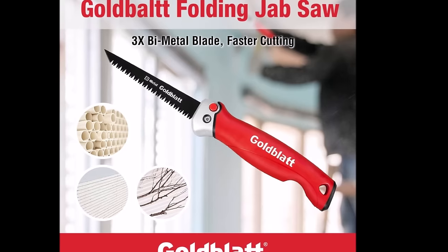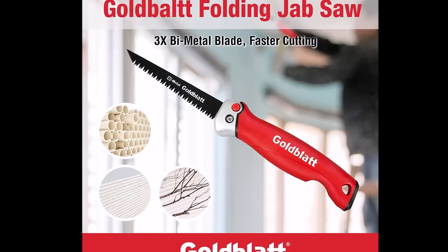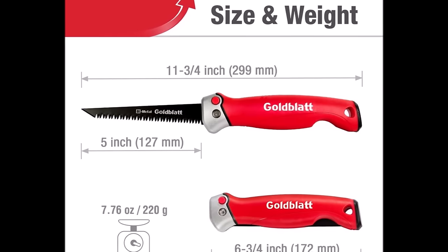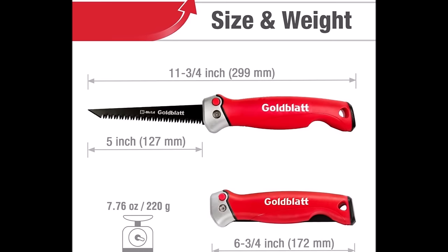A secure lock system prevents accidental blade closure, and the foldable design ensures easy carrying and storage. This saw is designed for precise cutting of drywall, wallboard, plywood, plastic, and PVC, making it ideal for home DIY projects, framers, general contractors, and woodworkers.